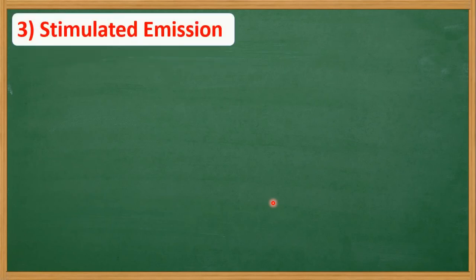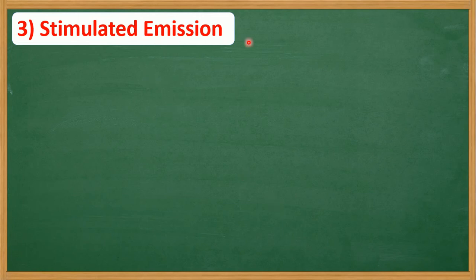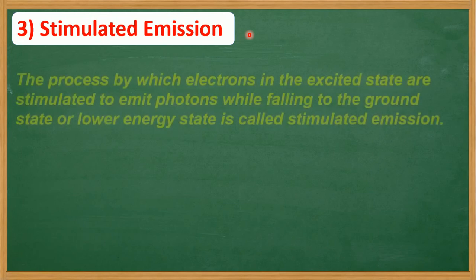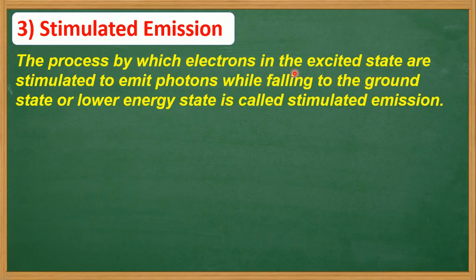Next important point is stimulated emission. You may remember that in the full form of laser, there is light amplification by stimulated emission of radiation. So we get laser by stimulated emission. The process by which electrons in the excited state are stimulated to emit photons while falling back to ground state or lower energy state is called stimulated emission.